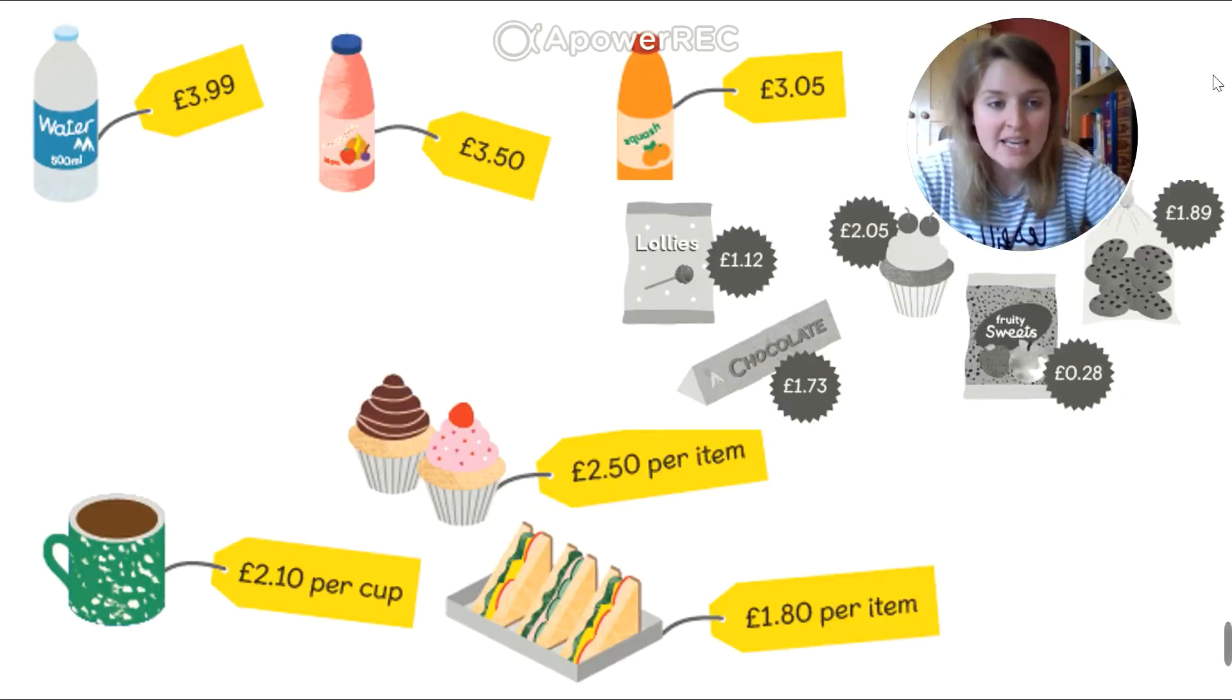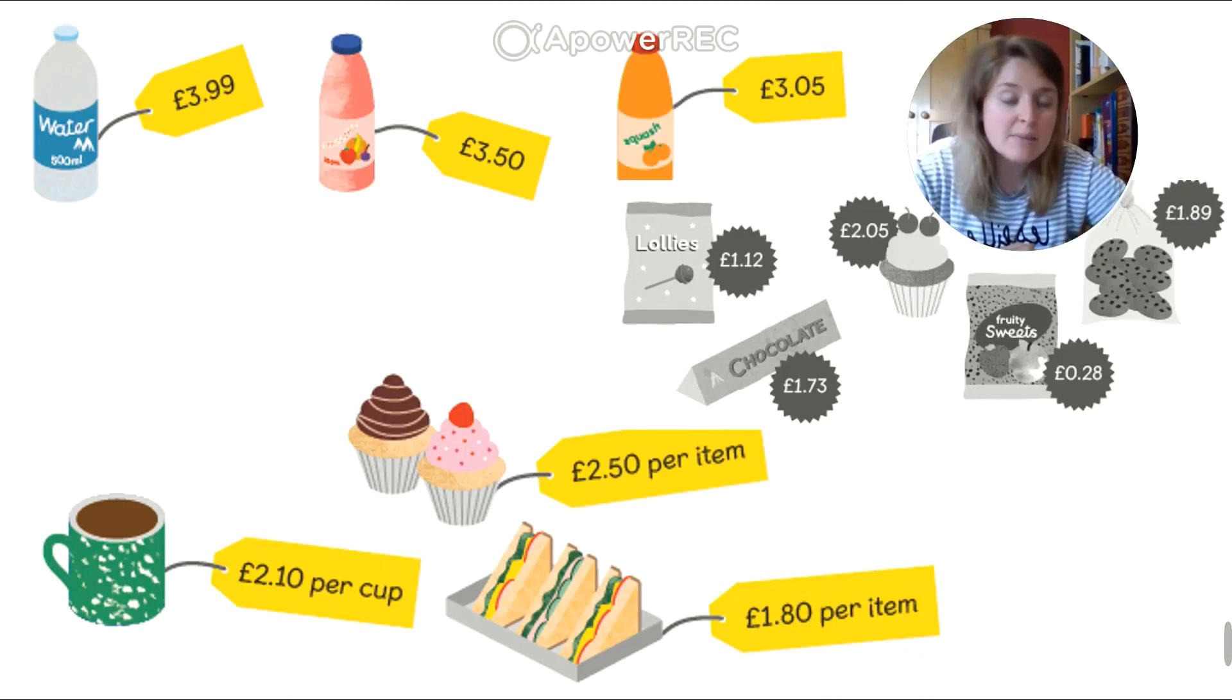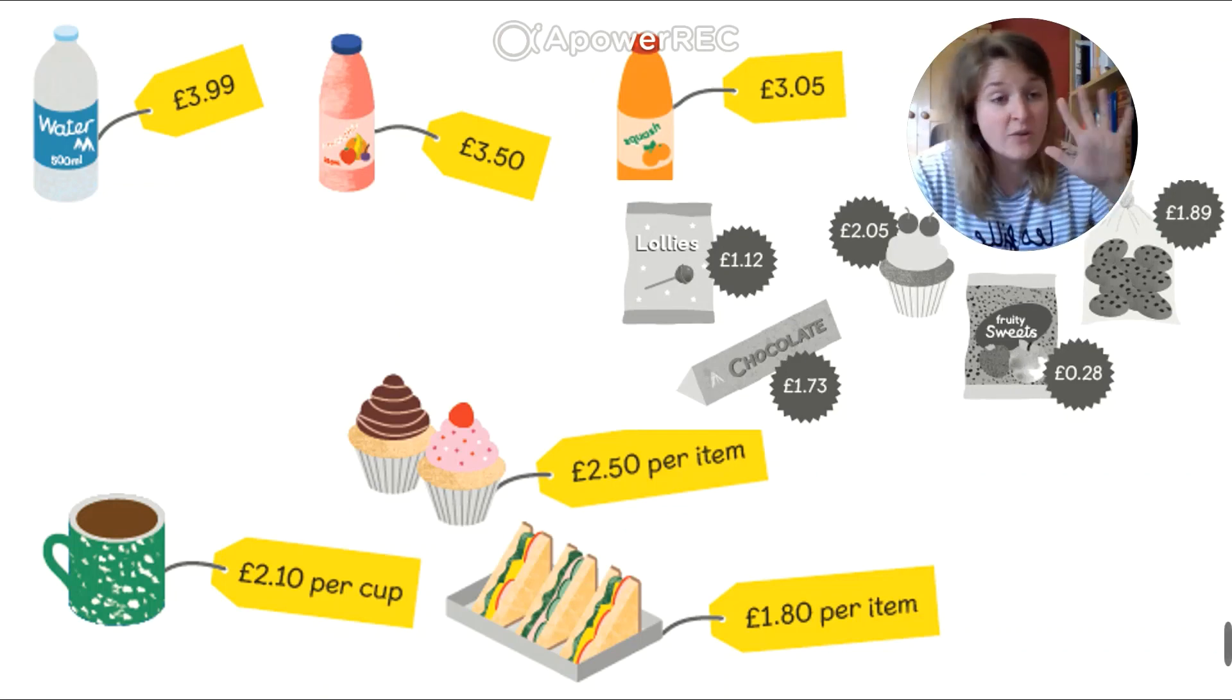OK. So here is your activity. This is my shop. And I would like you to choose two things to buy from my shop. Add them together and tell me what the total cost of them are. So you could choose, knowing you lot, you would choose really, really healthy things. So you're going to go for water and a nice cucumber sandwich, I'm sure. So you would have to add £3.99 for the water plus the £1.80 for the sandwich. And work out the total cost together just like I showed you. Do this at least five times.